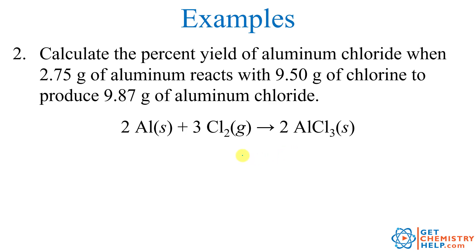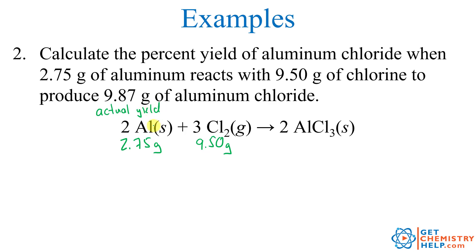One last example to really drive this point home. Calculate the percent yield of aluminum chloride when 2.75 grams of aluminum reacts with 9.50 grams of chlorine to produce 9.87 grams of aluminum chloride. The 9.87 grams is not the theoretical yield — that we have to calculate. This must be the actual yield, meaning when the experiment was run, they produced 9.87 grams. We need to calculate how many grams they should have produced — the theoretical yield.